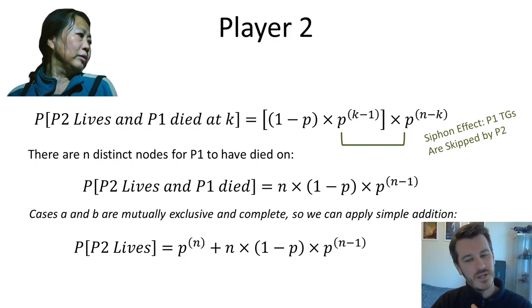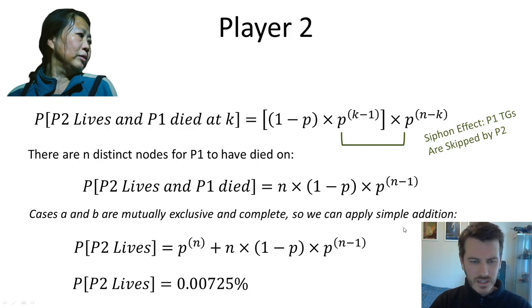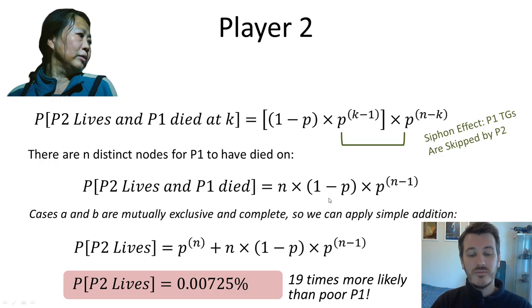This is all well and good for calculating what is the probability for player 2 living given that player 1 died on node K. But there are 18 different nodes, n different distinct nodes for player 1 to have died on. So the number of different possibilities statistically for player 2 to live and player 1 to die is simply 18 times whatever the particular result for one of the nodes is. That does change as we go up the list of players and it becomes a little bit more complicated. Now cases A and B are mutually exclusive as I said before. Player 1 has either lived or died. Not both. And not neither. So we can apply simple addition with the probabilities and we can calculate this formula. When you plug in the value of n equals 18 and p equals 0.5 you get this value here. 0.00725% which is 19 times more likely than poor old player 1. However, it's still astronomically unlikely. She has less than a 1 in 10,000 chance of survival.